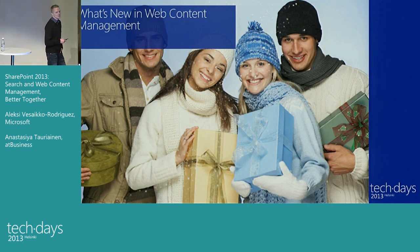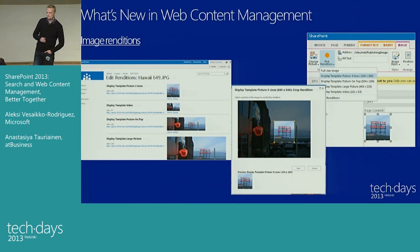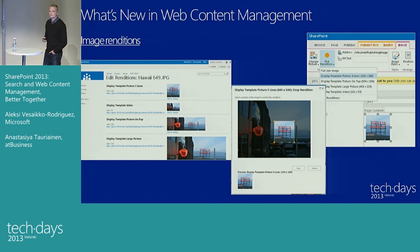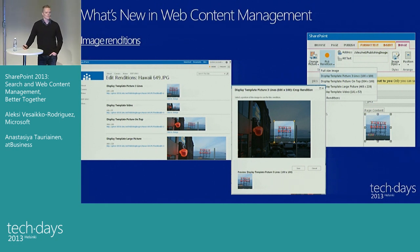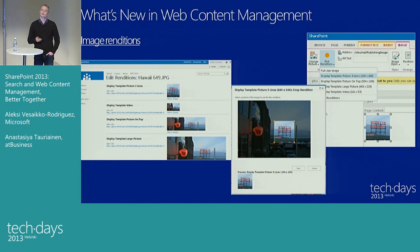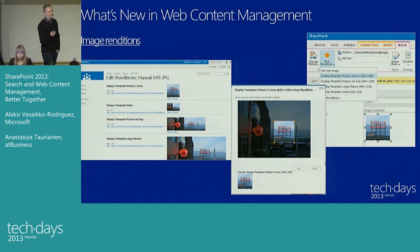First, we'll go through some of the new features in web content management. I'm going to tell you about image renditions. This is an interesting small feature within web content management that may help content producers in your organization. It's basically meant for reducing page weight. Once you upload images into your SharePoint site - say an internet site - you may have a dedicated set of different renditions ready-made. For example, if you have a huge 10-megabyte image, you can have four different lighter renditions. For a mobile device with a slow connection, you pick a really thin version of the image, and SharePoint does it automatically.